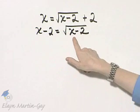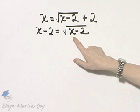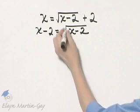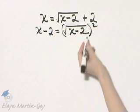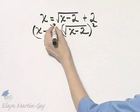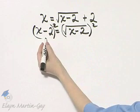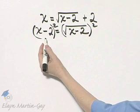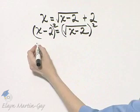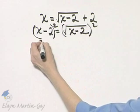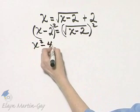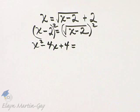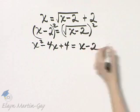Now, once this radical is isolated, we want to remove it by using the power rule — I will square both sides. I'll square the right side, and because I squared the right side, I must also square the left side. Here's a common place where mistakes occur: you are squaring a binomial. Don't forget that's x minus 2 times x minus 2. In squaring, that gives x squared minus 4x plus 4, equal to the radicand x minus 2.